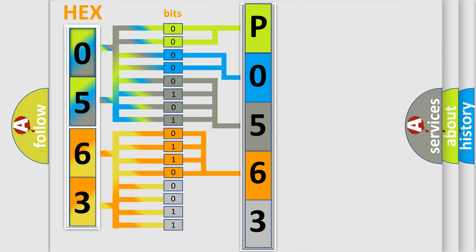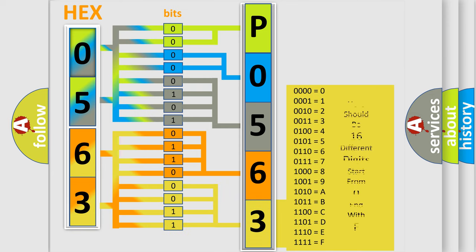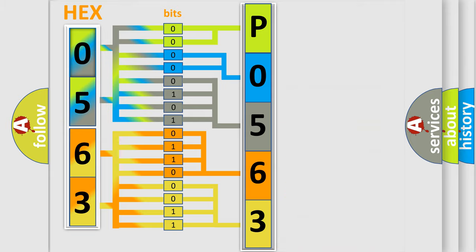A single byte conceals 256 possible combinations. We now know in what way the diagnostic tool translates the received information into a more comprehensible format.